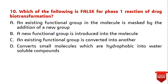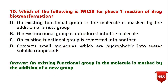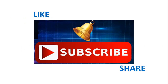Question ten: which of the following is false for a phase one reaction of drug biotransformation? Option A states that an existing functional group in the molecule is masked by the addition of a new group — this describes a prodrug, not biotransformation, so it is the false statement. Option B — a new functional group is introduced into the molecule — is seen in biotransformation. Option C — an existing functional group is converted to another — also occurs in biotransformation. Option D — converting hydrophobic molecules to water-soluble compounds — also describes metabolism. The false statement is option A.